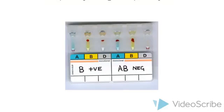Here are two examples of gel card results from two patients. The first patient showed a positive result at the anti-B and anti-D gel. Thus, this indicates that the first patient has B positive blood group.